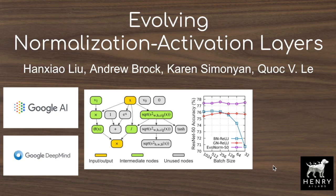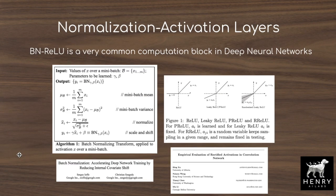This experiment constructs a design space of unified normalization and activation layers and uses evolution to search through it. The experiments show that the discovered layers EvoNorm B0 and S0 work better than the common practice of batch normalization followed by a ReLU activation — one of the most common computational blocks in deep convolutional neural networks used for tasks like image classification, training of generative adversarial networks, object detection, or segmentation.